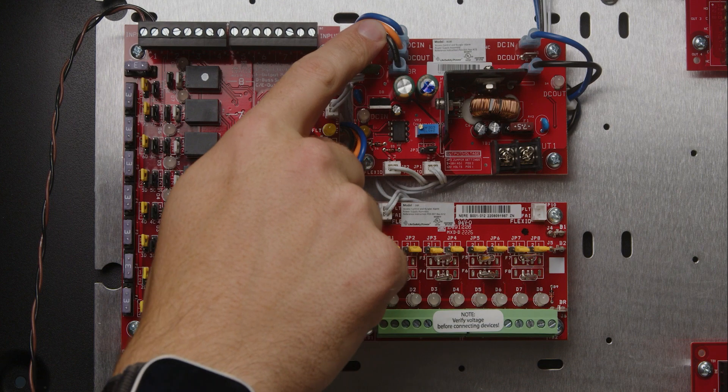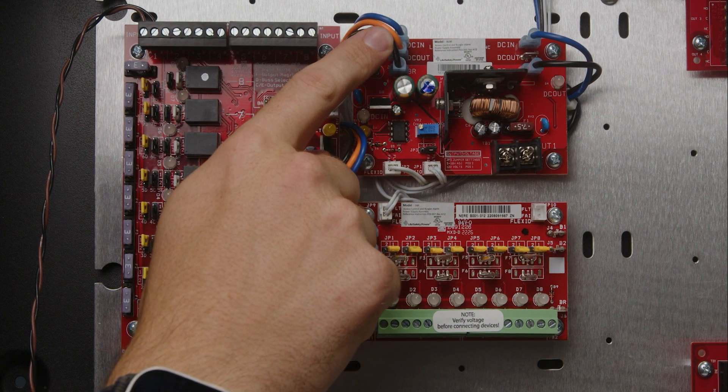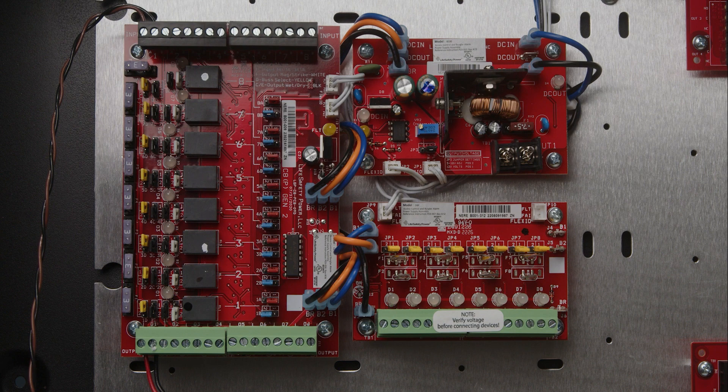On the left side, we have our B1-B2-BR bus feeding both the 24 volts and the 12 volts to our downstream devices.